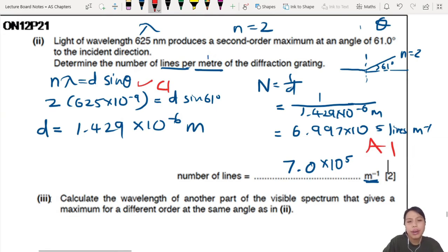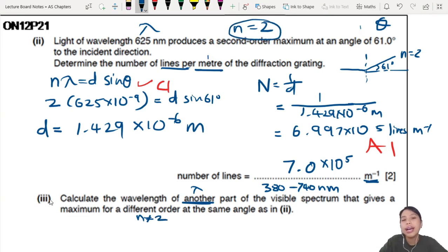Then you come to another part. Calculate the wavelength of another part of the visible spectrum that gives a maximum for a different order at the same angle. So you want another wavelength in the visible section. So what's the visible spectrum? You need to know roughly it's 380 to 740 nm. Our eyes can see. That gives a maximum for different order. Also it cannot be n equals 2 because here we already look n equals 2. So another light will have the same angle as this one in the first part, but it will be different wavelength.